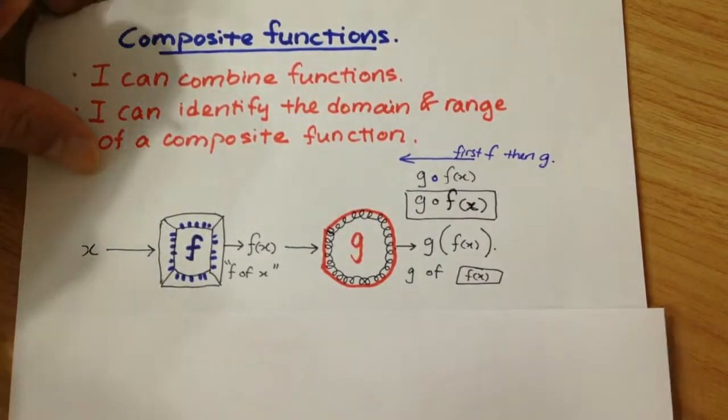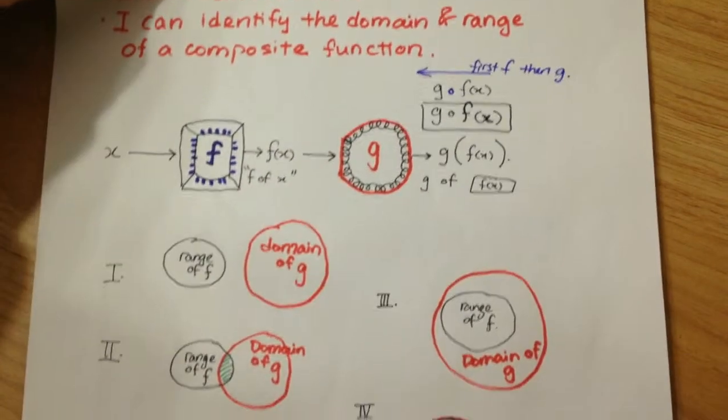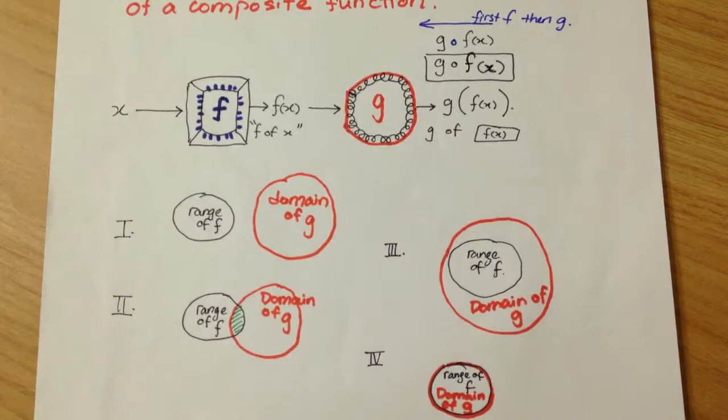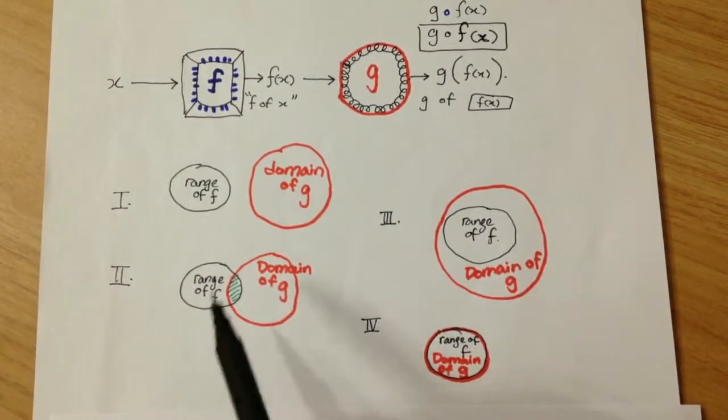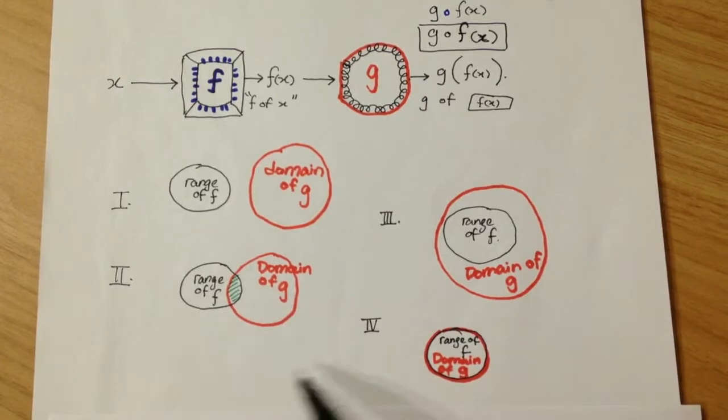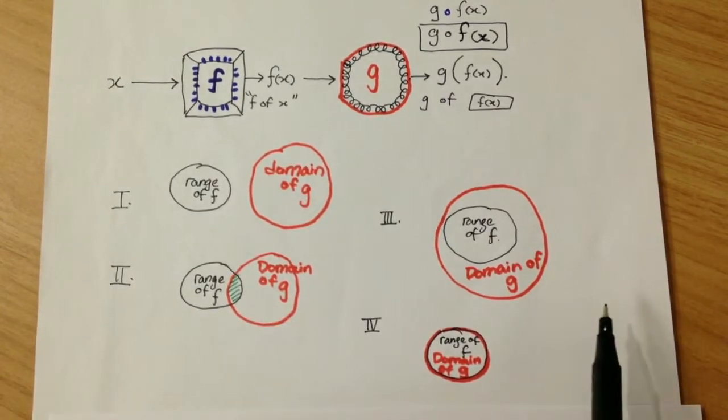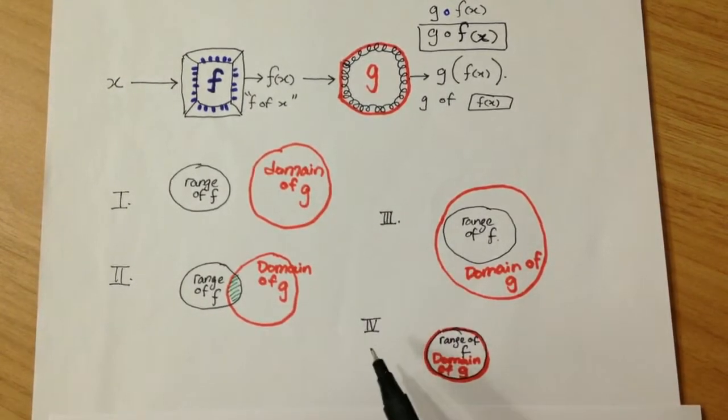So here, I have four diagrams, four mapping diagrams, and you have to decide, maybe pause the video and decide which of these will allow you to have a composite function.